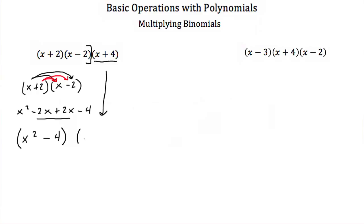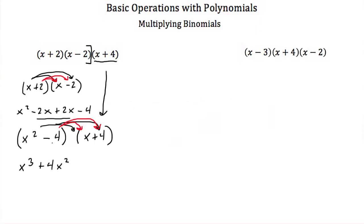Now we carry down the third binomial, x plus 4, and multiply it by that result. I take x squared and multiply it by both terms, then take negative 4 and multiply it by both terms. So x squared times x is x cubed, x squared times 4 is positive 4x squared, negative 4 times x is negative 4x, and negative 4 times positive 4 is negative 16.